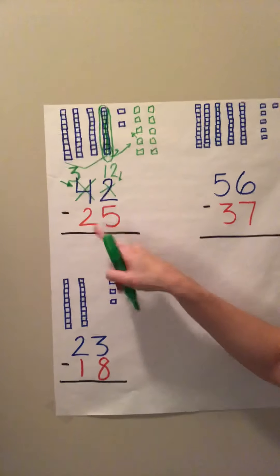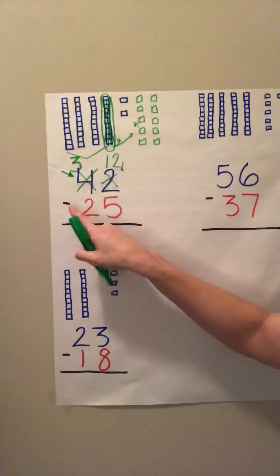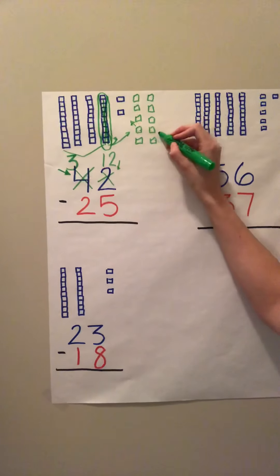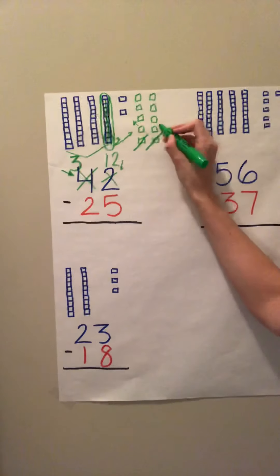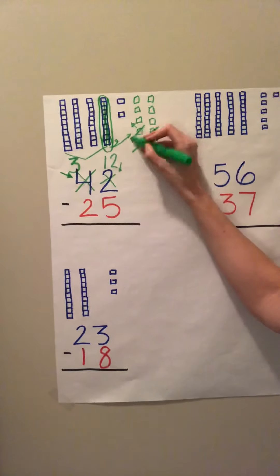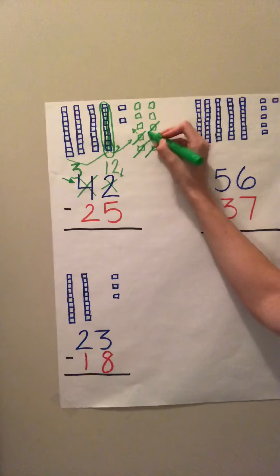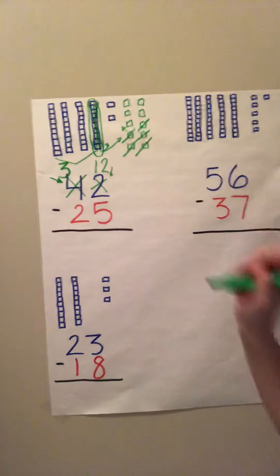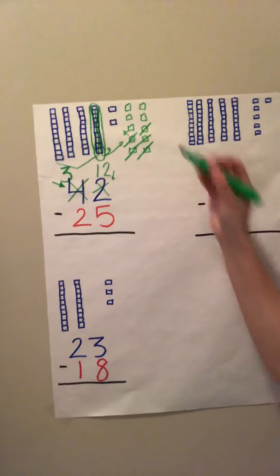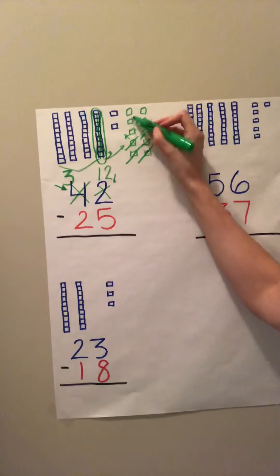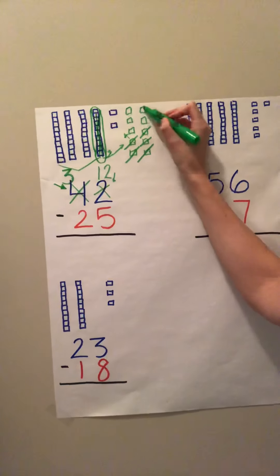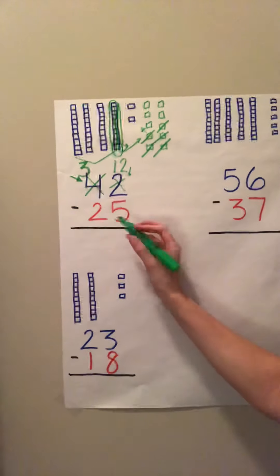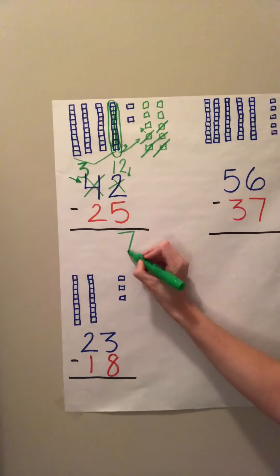Now we can subtract. So we have twelve and we need to take five away. So we're going to take five away — one, two, three, four, five — and we're going to see what we're left with. We have one, two, three, four, five, six, seven. So when we have twelve and take five away, we have seven.